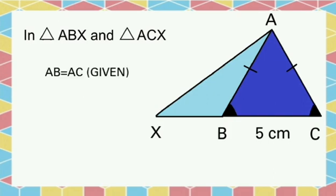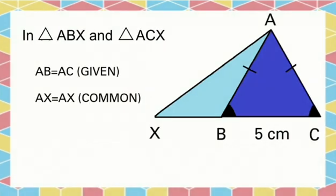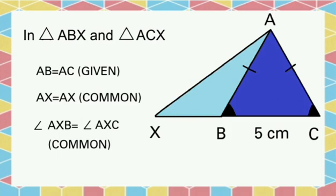AB equals AC, that is given. AX equals AX, that is common. And angle AXB equals angle AXC, that is also common.